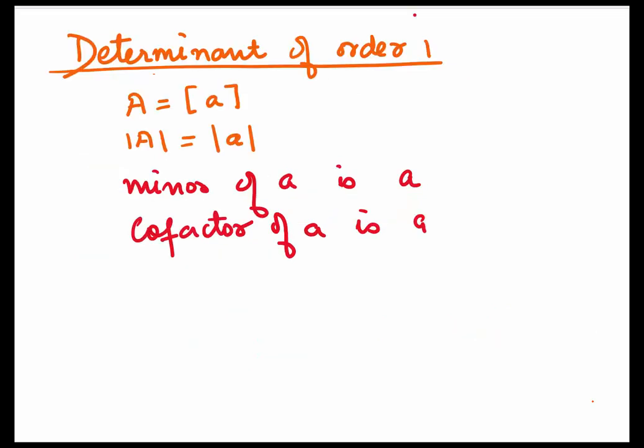As determinants are of different orders, their minors and cofactors are also found in different ways. For a determinant of order 1, as there is a single element, its minor and cofactor will be the same. If we take a matrix A with the single element small a, then its minor is also small a and its cofactor is also small a.